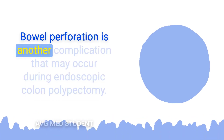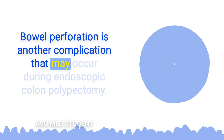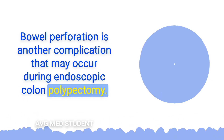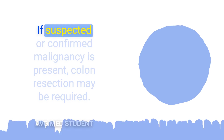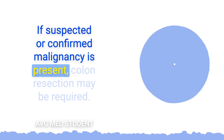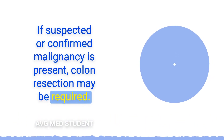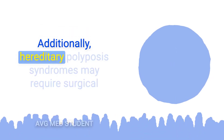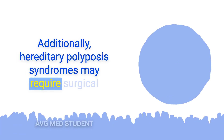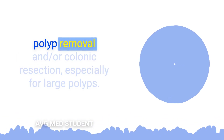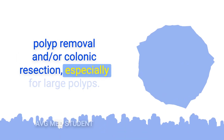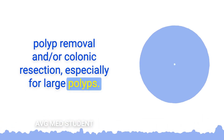Bowel perforation is another complication that may occur during endoscopic colon polypectomy. If suspected or confirmed malignancy is present, colon resection may be required. Additionally, hereditary polyposis syndromes may require surgical polyp removal and/or colonic resection, especially for large polyps.